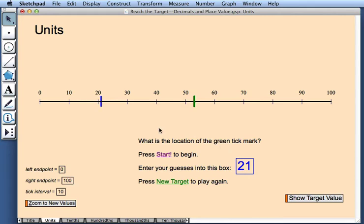Now after I play for a while, I might want to try a different number line. To do so, I come over here to the lower left corner of my sketch, and I can change the left endpoint, the right endpoint, or the tick interval of my number line.